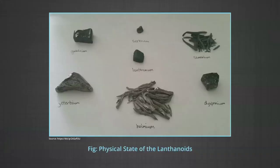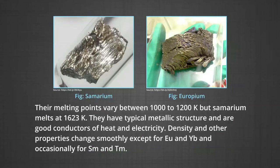Regarding general characteristics and physical state: all the lanthanides are silvery white soft metals and they tarnish rapidly in air. The hardness increases with increasing atomic number, with samarium being steel-hard. Their melting points vary between 1000 to 1200 Kelvin, but samarium melts at 1623 Kelvin. They have typical metallic structure and are good conductors of heat and electricity. Density and other properties change smoothly, except for europium and ytterbium, and occasionally for samarium and thulium.